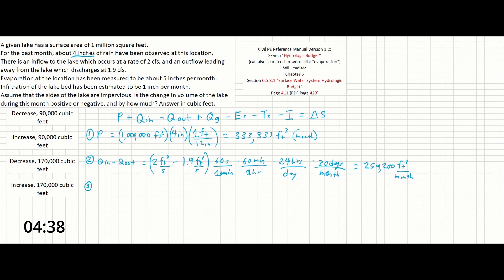Next, there is no Q_sub_g in this problem, so we can cross it out, but we have evaporation here. That's been measured at 5 inches a month. So we can say evaporation equals 5 inches per month times 1 foot over 12 inches times 1 million square feet. And that will give us 416,667 cubic feet.